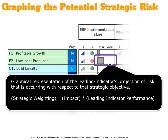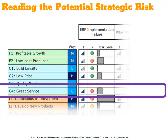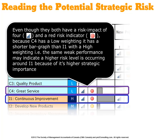It's a simple mathematical case of multiplying the strategic objective's weighting. Looking at two objectives that both have the same impact level of four and the same red risk indicator — one showing the leading indicator related to ERP implementation and great service, the other showing ERP implementation's impact on continuous improvement — both measures are performing below target and therefore show the red icon.